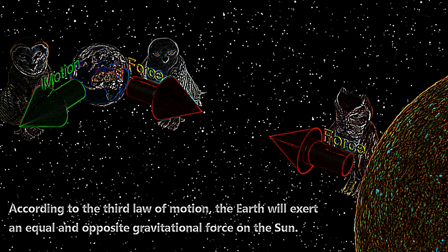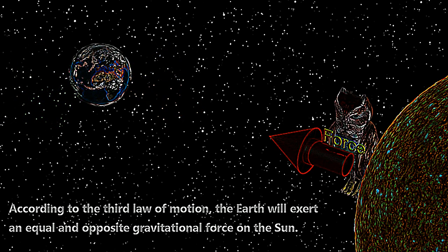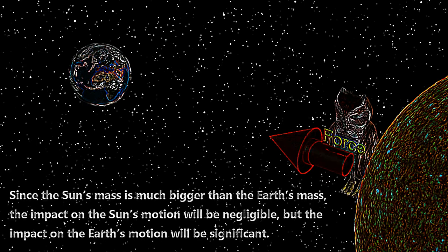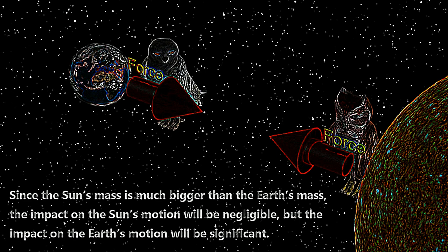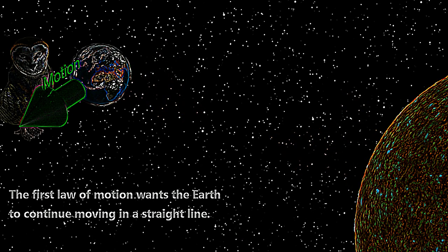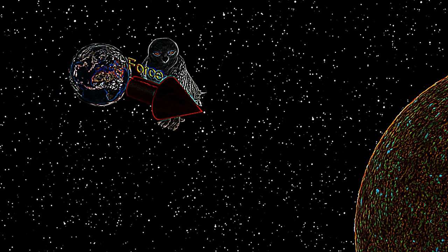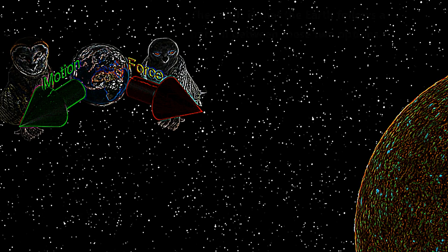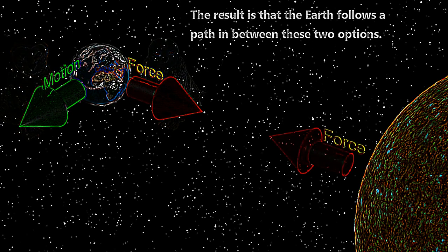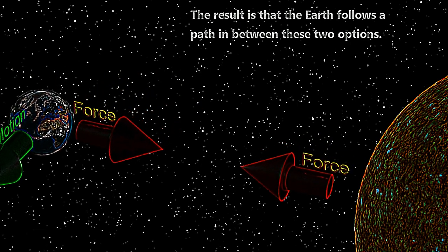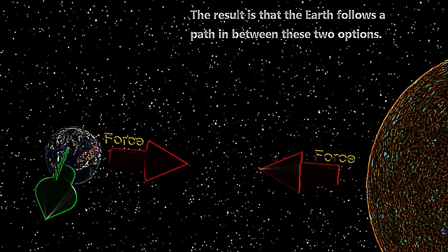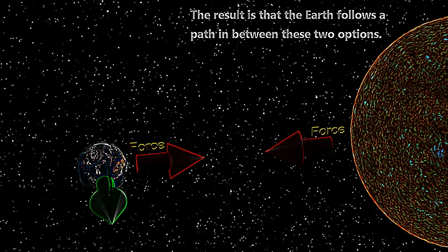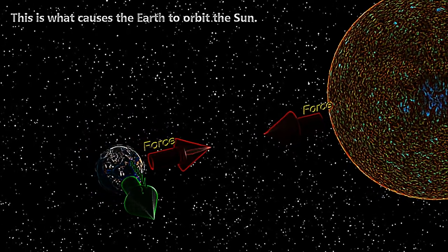According to the third law of motion, the Earth will exert an equal and opposite gravitational force on the Sun. Since the Sun's mass is much bigger than the Earth's mass, the impact on the Sun's motion will be negligible, but the impact on the Earth's motion will be significant. The first law of motion wants the Earth to continue in a straight line, the second law wants it to fall into the Sun, and the result is that the Earth follows a path in between — this is what causes the Earth to orbit the Sun.